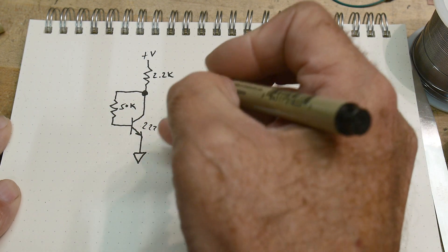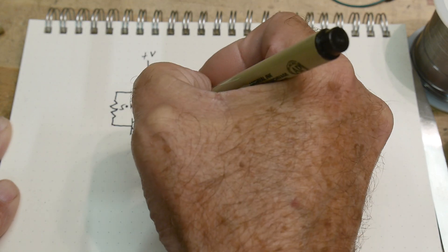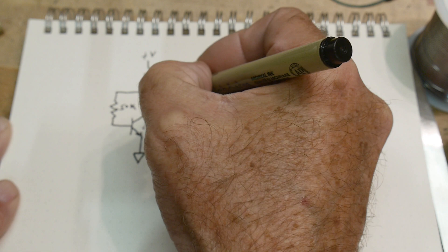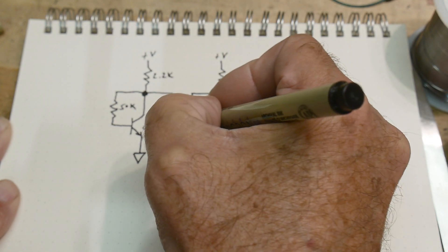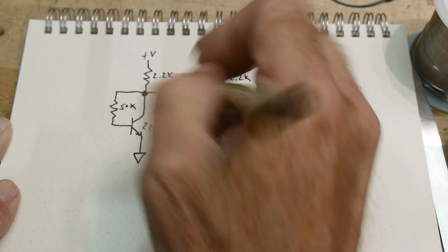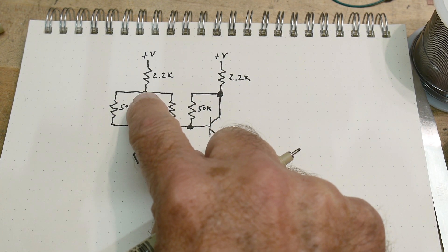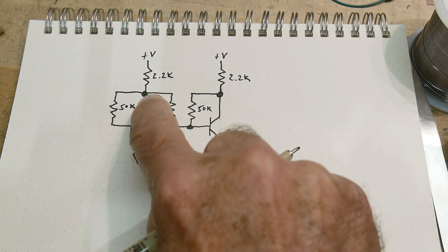So then what if we do one thing? What if we do this? And we'll make this 22k. So remember this transistor was on. So what's the voltage here at this node?